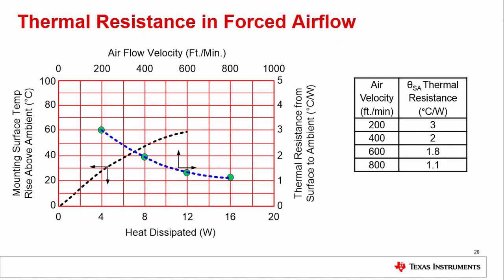The second graph shows how airflow, normally provided by a cooling fan, affects the surface-to-ambient thermal resistance theta SA. The associated axes are at the top and right of the plot area. In this case, you can read the thermal resistance directly from the graph for a given airflow velocity in feet per minute. As you might expect, increased airflow results in decreased thermal resistance. Note that air velocities of less than 200 feet per minute are considered to be natural convection, in which case the other curve applies.